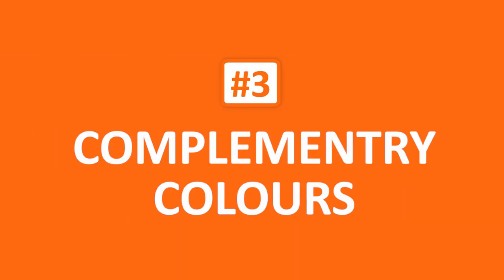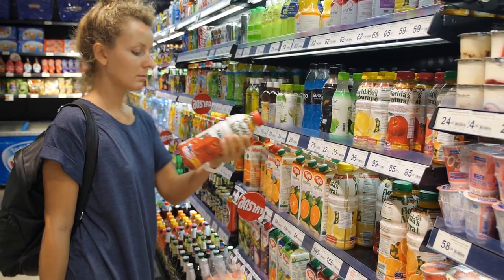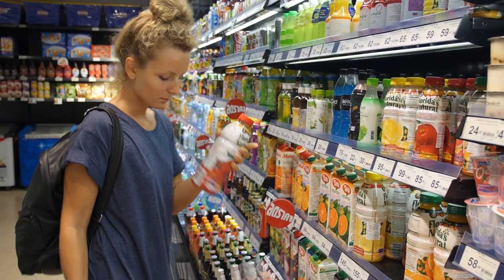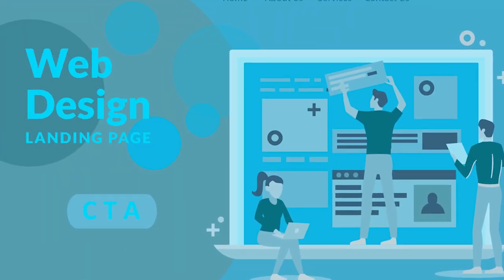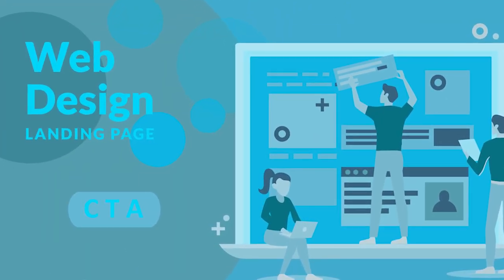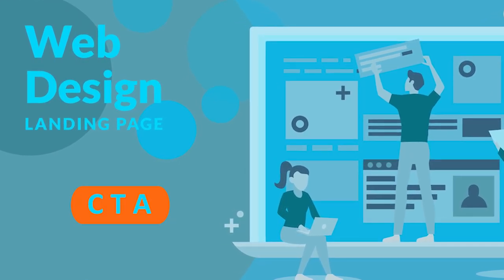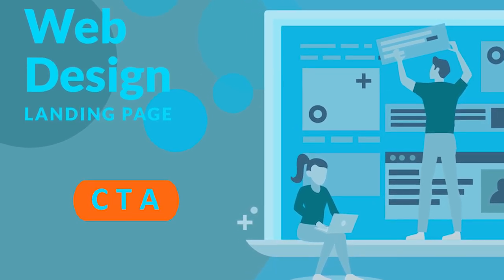Thirdly we have number three: complementary colors. These are colors which are basically on the opposite side from each other on the color wheel. For example, if you're deciding on the color scheme of a product which will be on the shelves of supermarkets and you really need it to stand out and be noticed in a crowded space, complementary colors can be a good option. Or if you have a web page which has a blue color scheme and you really want to draw attention to your call to action button, using blue's complementary color orange will provide you with the highest degree of contrast and help your CTA stand out on the page.